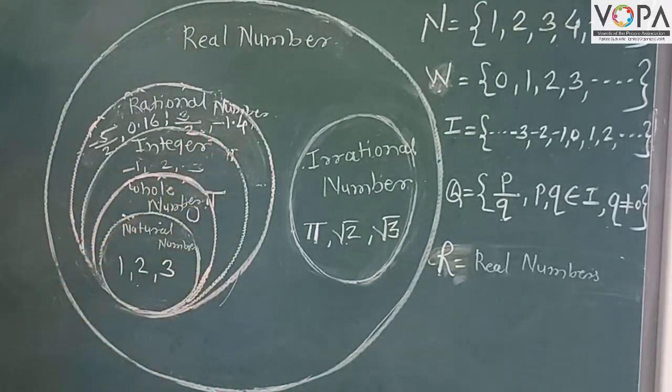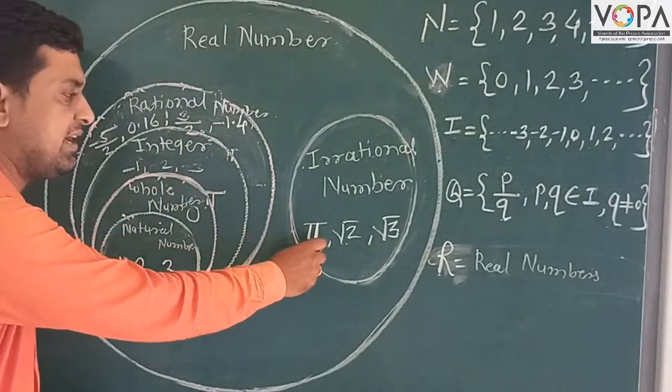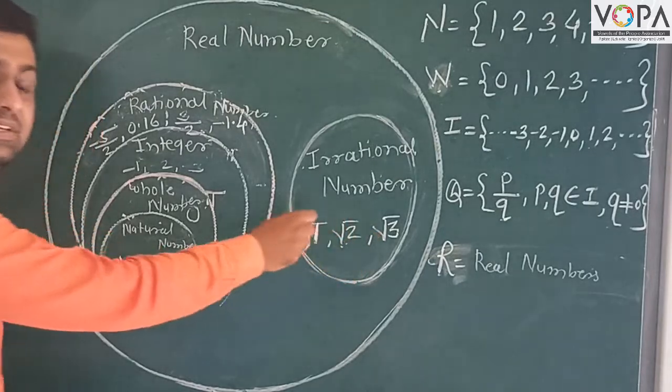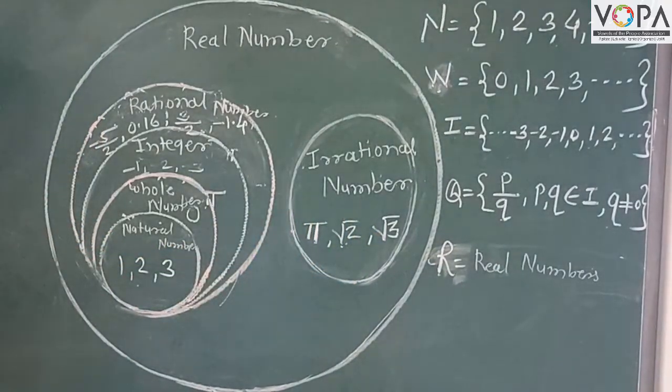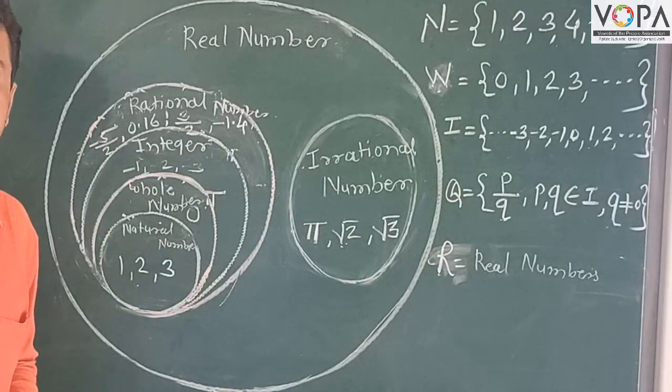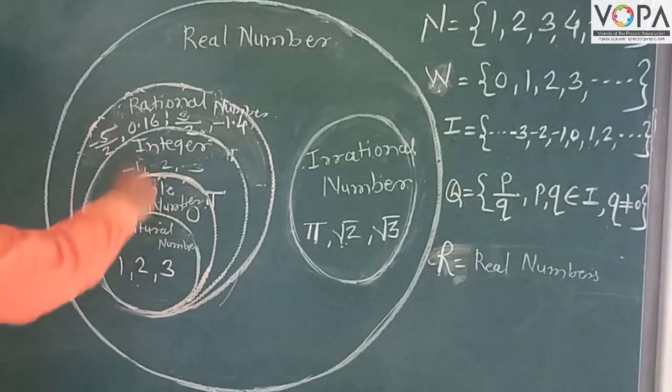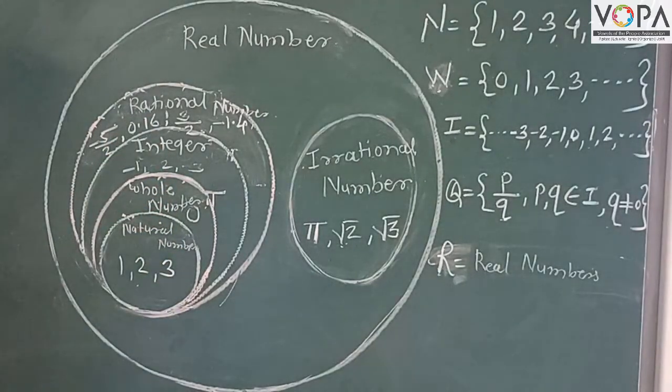Irrational numbers: root 2, root 3 is called as irrational numbers. Irrational numbers are also called as non-terminating. And rational numbers are also called as terminating, which is explained in another lecture.